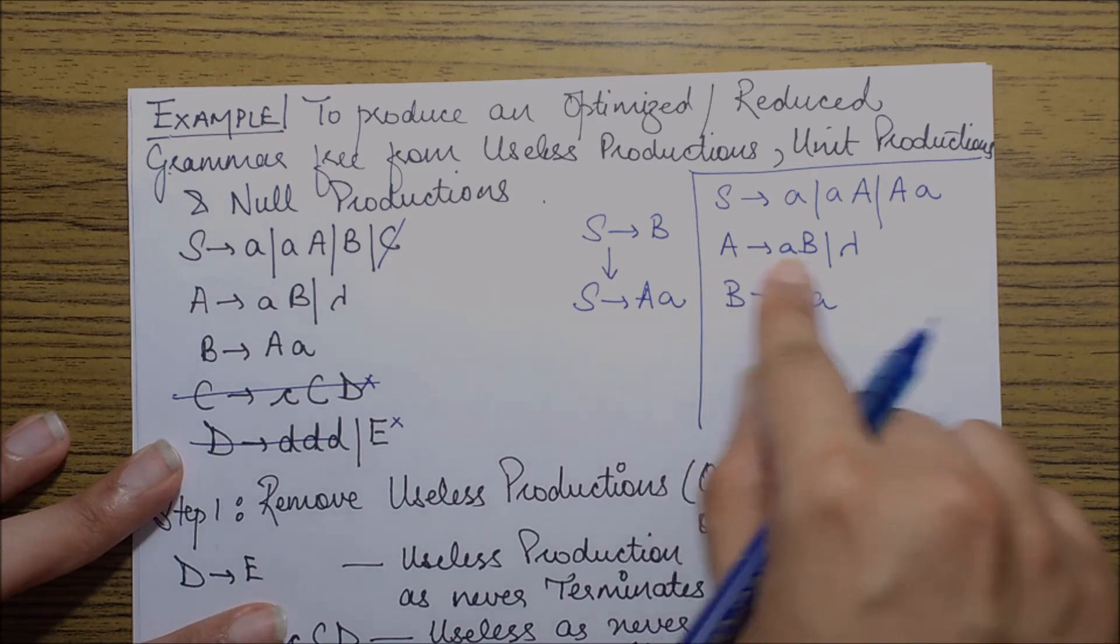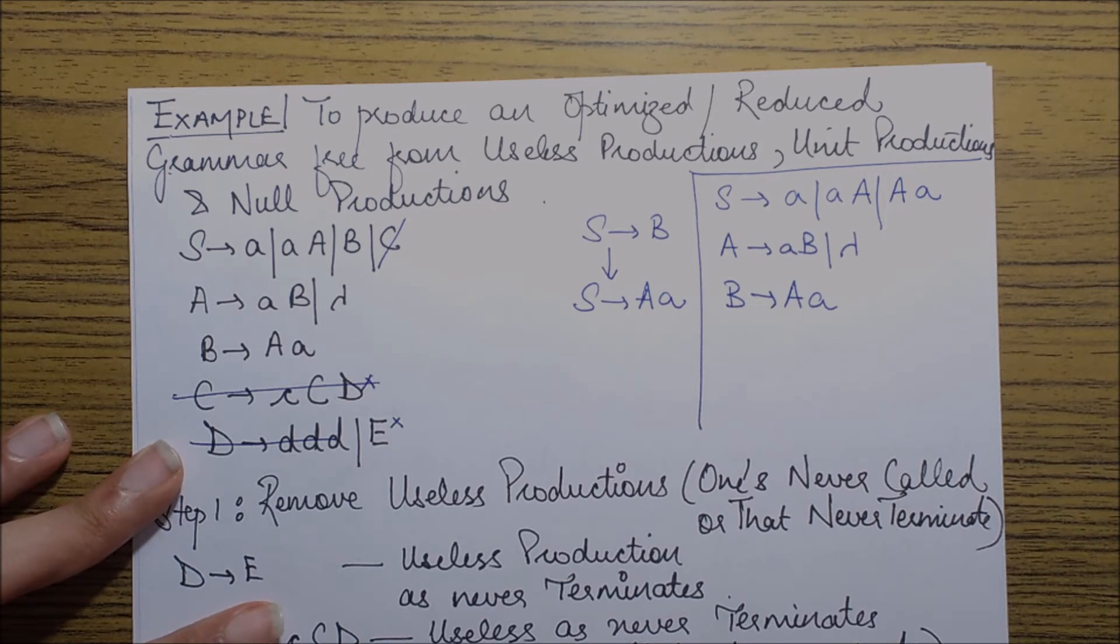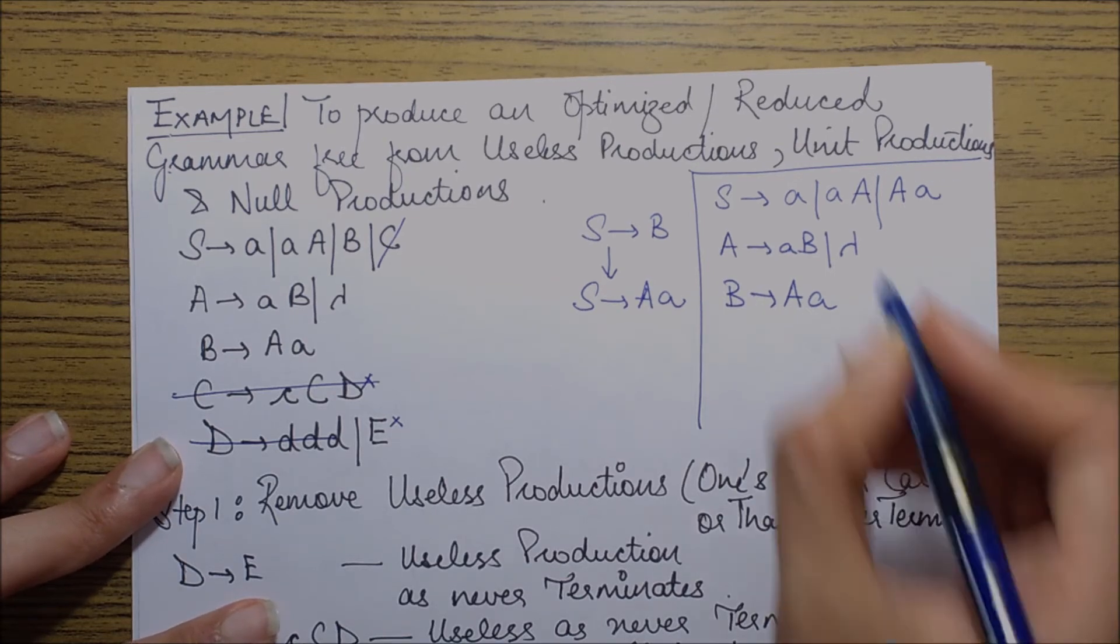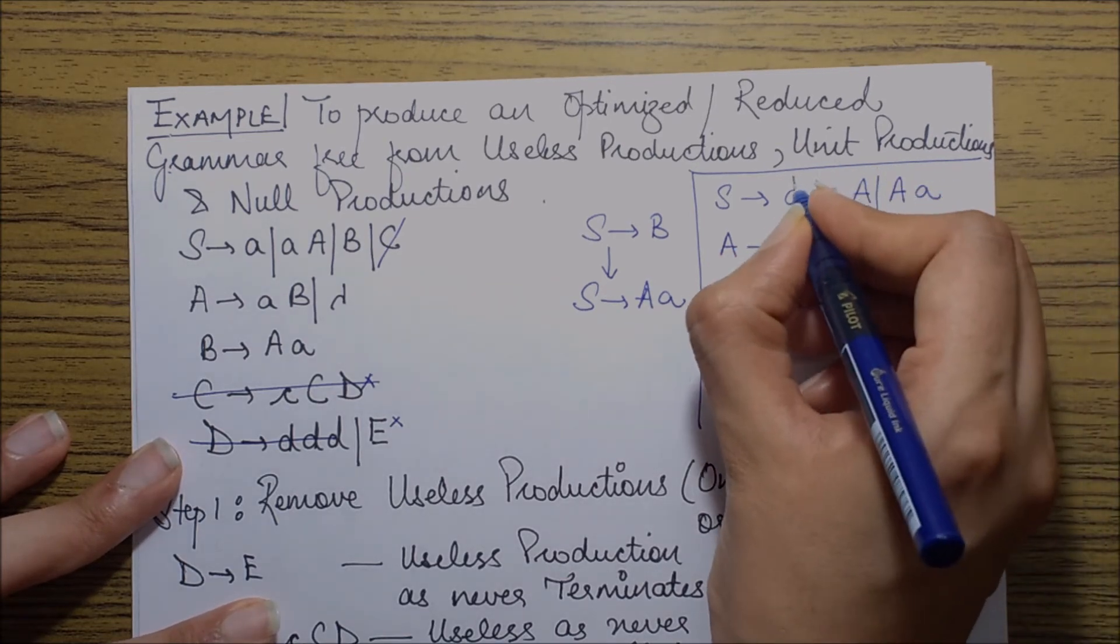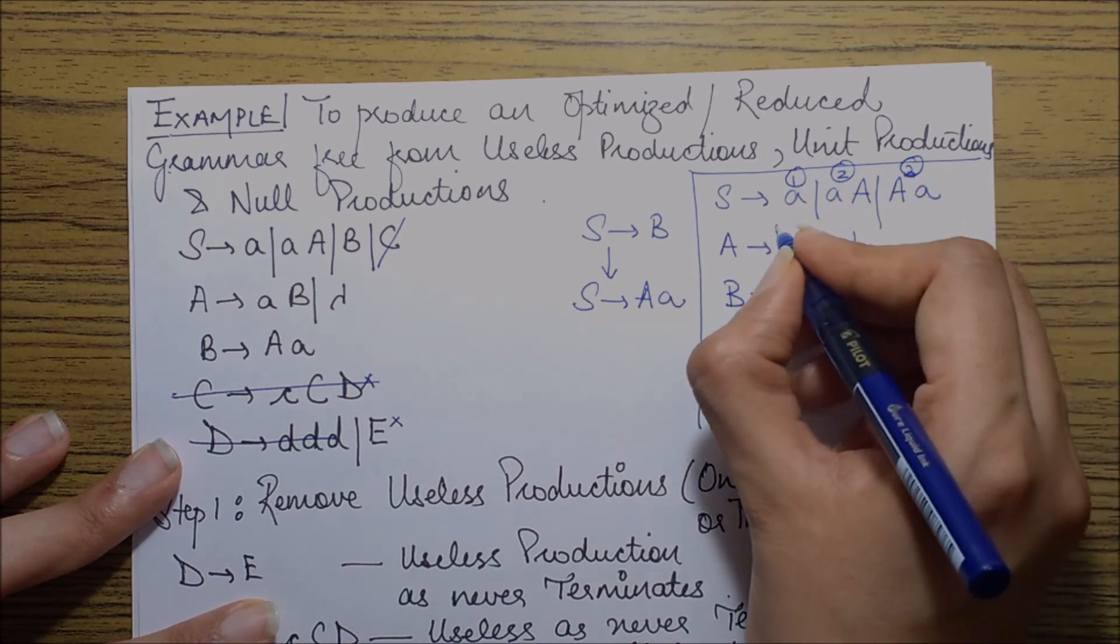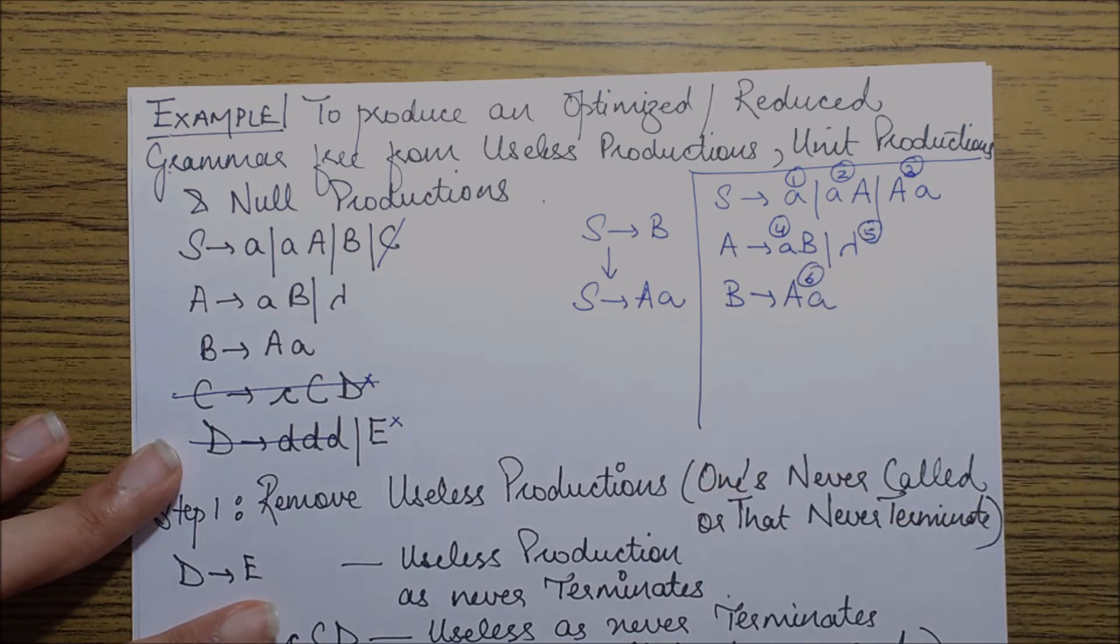So next finally is the task of removal of null productions. As you can see, there is only one null production A goes to lambda and the procedure was to substitute A to all the various possible places and obtain the new productions which can be obtained by doing so. So we can see that if I number the productions as 1, 2, 3, 4, 5, 6, obviously 5 is the production that I need to remove.